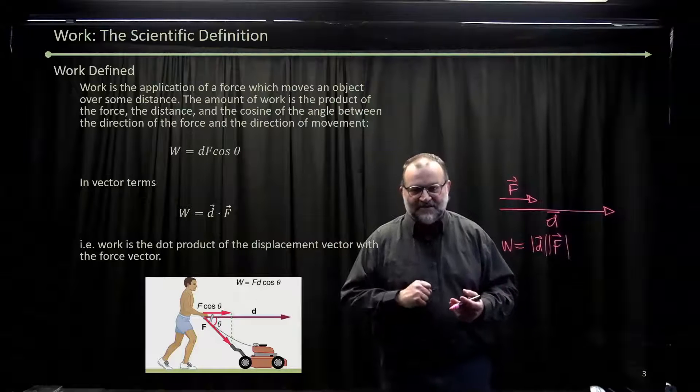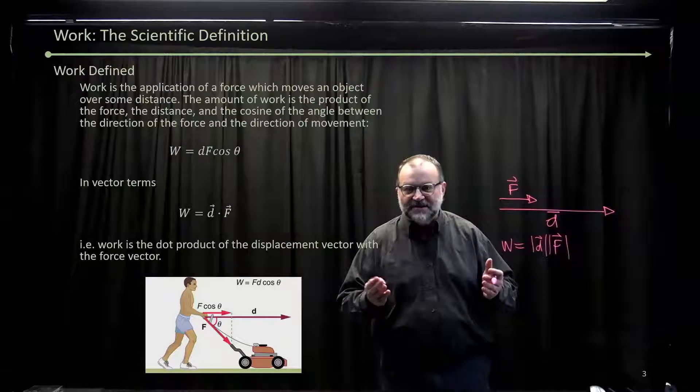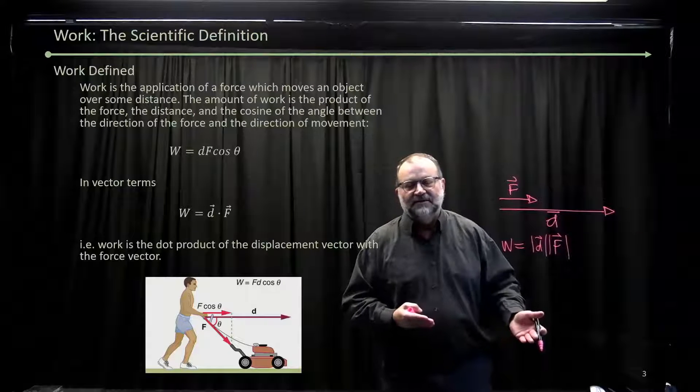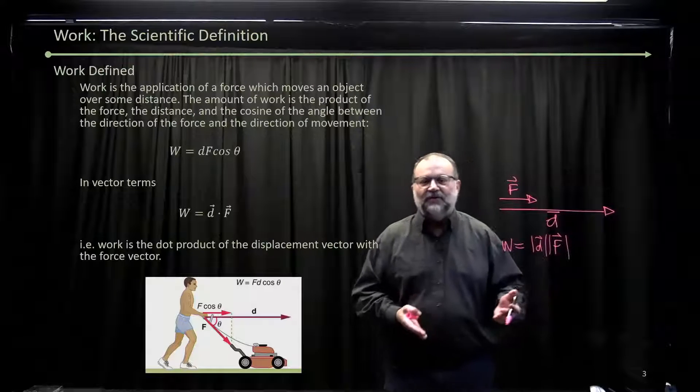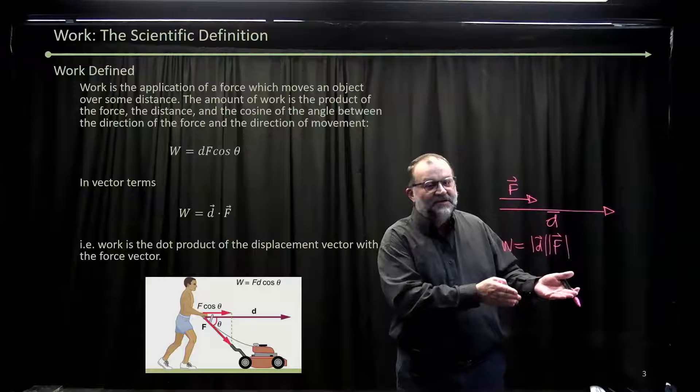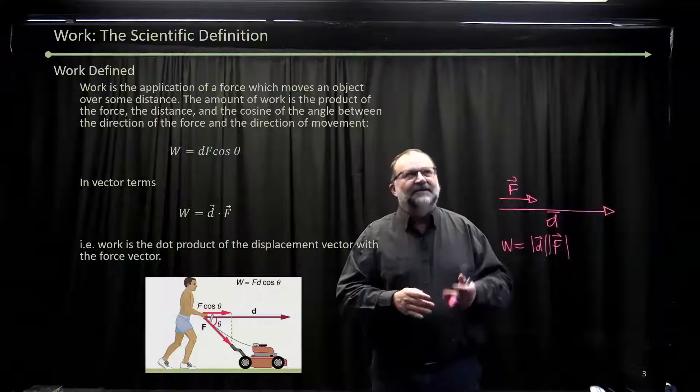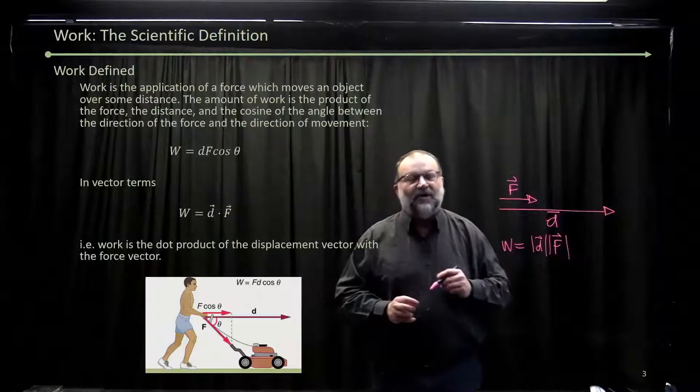However, like in this illustration, the force and the direction of motion are not perfectly in a line. So you have to take into account that only part of the force is doing the work and the other part is not. And so you're going to use what's called a dot product.